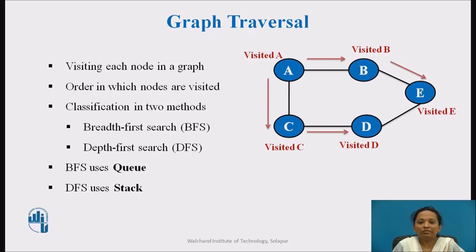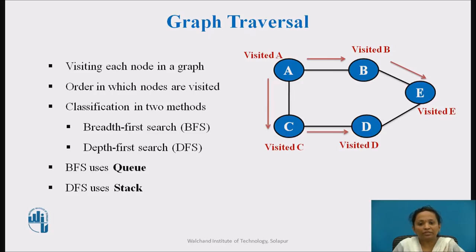There are two standard methods of graph traversal. The first one is breadth-first search, we call it BFS. The second method is depth-first search, that is DFS. Breadth-first search uses a queue as a helping data structure to store nodes for further processing. Depth-first search uses a stack as a helping data structure to store nodes for further processing.